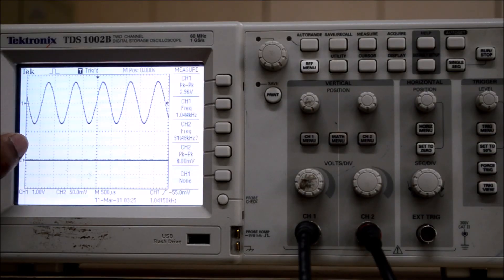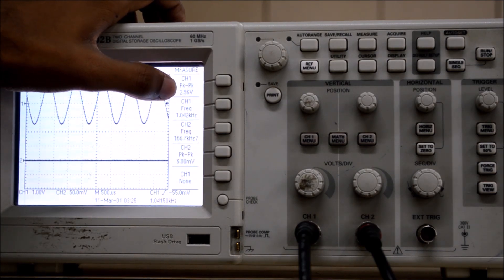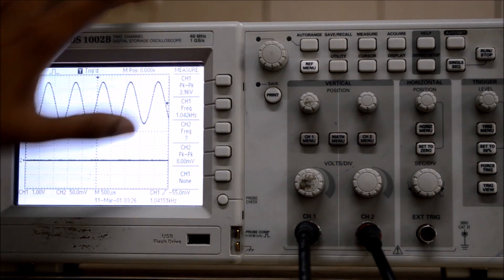As we can see, the input sine wave has a frequency of 1kHz and a peak-to-peak voltage of 2.96V, which we could round off to 3V. We need to make a note of these readings.